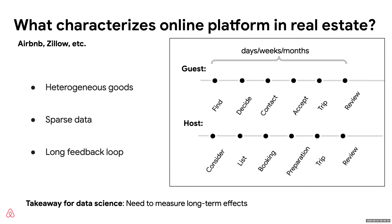Another challenge is the long feedback loop. For Airbnb, a guest might find a home, decide it's the one they want, contact the host, the host accepts, they take the trip, and then leave a review. In some instances it's a matter of days, but often it's a matter of months. So it takes a long time to get feedback on how the whole process went — was the guest happy, was the host happy? The takeaway for data science is that we need to think about long-term effects carefully. We can't just run an experiment and expect to have all the answers within a few days.